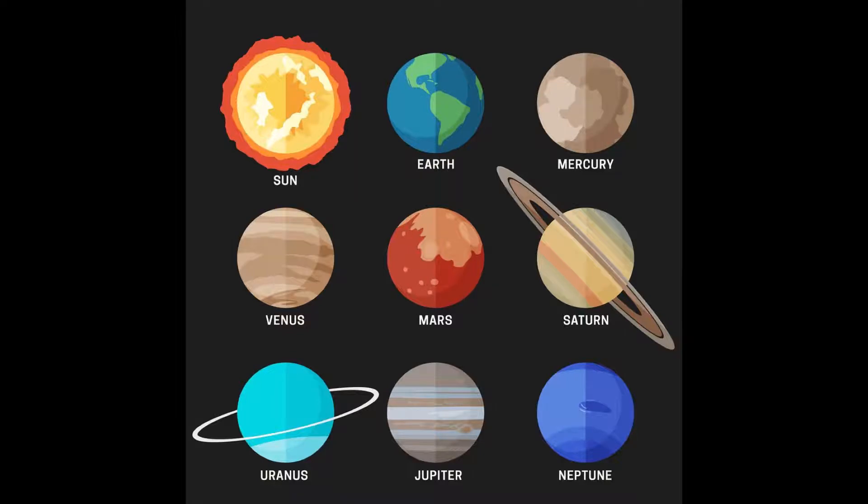There are eight planets in our solar system. Mercury, Venus, Earth, Mars, Jupiter, Saturn, Uranus, and Neptune.